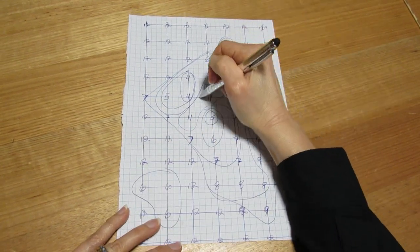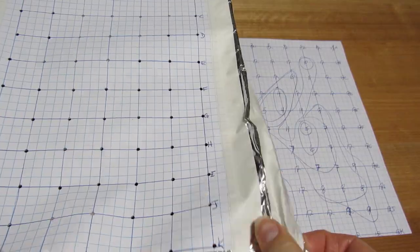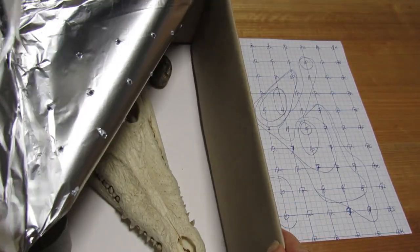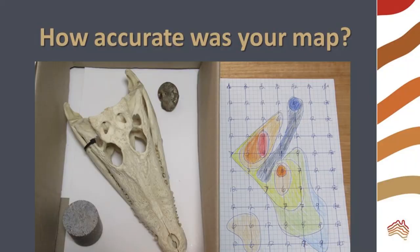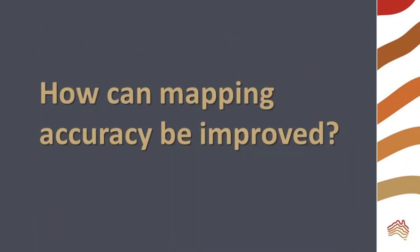Remove the foil and grid to compare your contour map with the real items. How close did you get? I suspect that the deep areas in the middle of my crocodile skull are the eye holes. On the contour map, they merge and connect with the ammonite shell. How do you think the mapping accuracy could be improved?